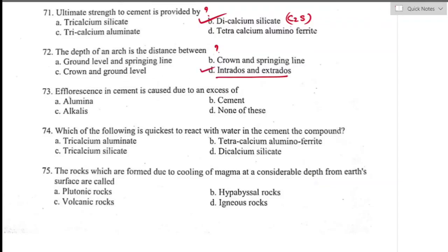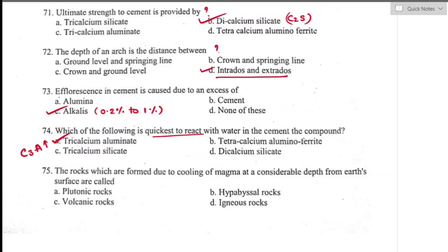Question number seventy-three: efflorescence in cement is caused due to excess of alkalis, which should be limited to 0.2% to 1% of cement. Efflorescence is the white powder substance on the surface of concrete. Question number seventy-four: tricalcium aluminate (C₃A) reacts quickest with water in cement. Option A is the right answer — it has higher affinity to water, generates more heat, is responsible for initial setting, and has higher heat of hydration.